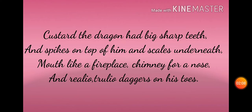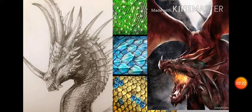'And the dragon has big sharp teeth, and spikes on top of him and scales underneath, mouth like a fireplace, chimney for a nose, and really truly daggers on his toes.' Custard کے دانت لمبے اور تیز ہیں، اس کے اوپر spikes اور نیچے scales ہیں۔